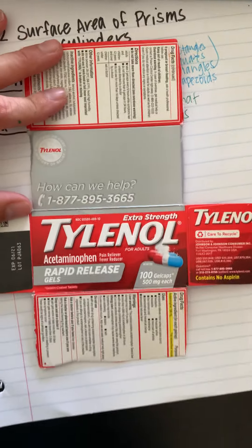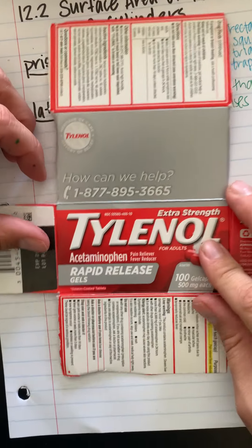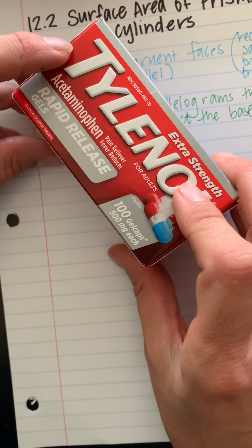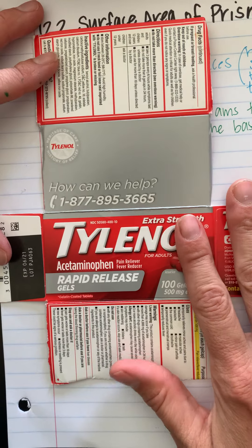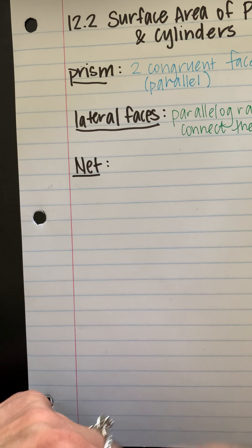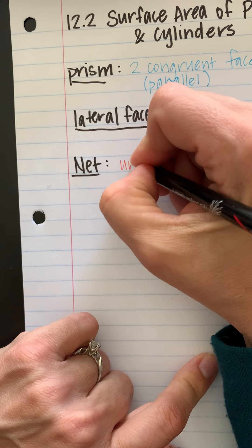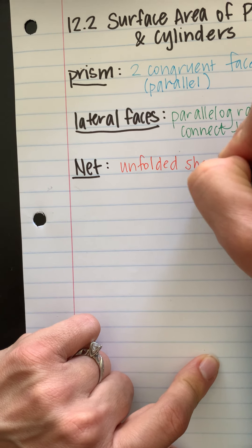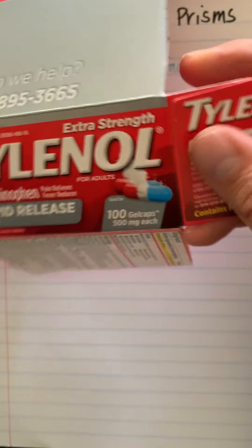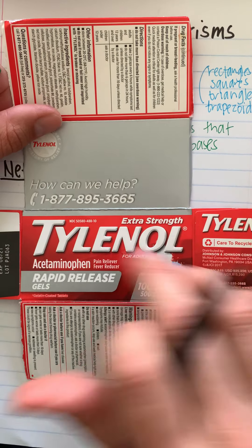Why I cut it up this way is because when I unfold it, this is called a net. If I'm trying to find the surface area and I fold this back up, this is what would cover the box — that's considered the surface area. So if I cut this apart and unfolded it, that's called its net, and I would find all the areas of these pieces and add them together. Those are a couple of vocab words you'll see. A net is the shape unfolded, and there are no overlapping pieces in a net.